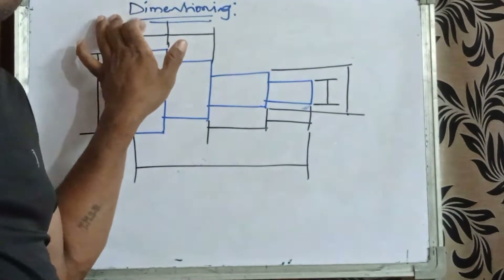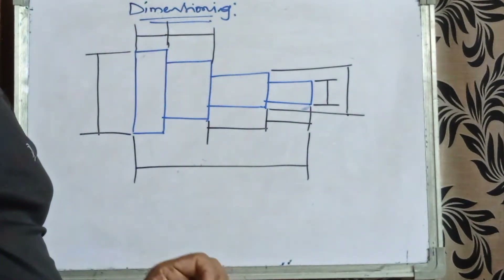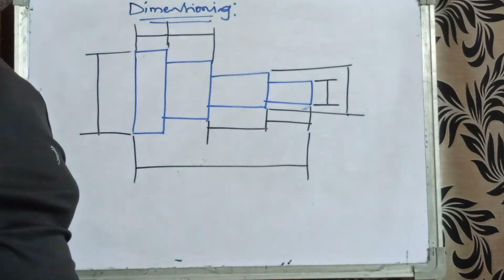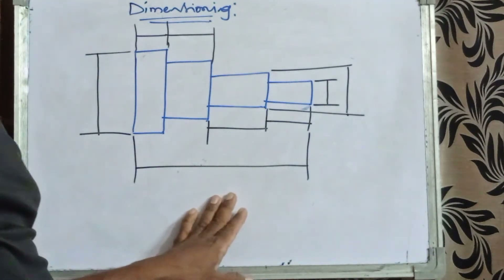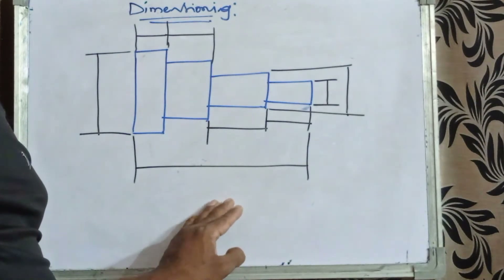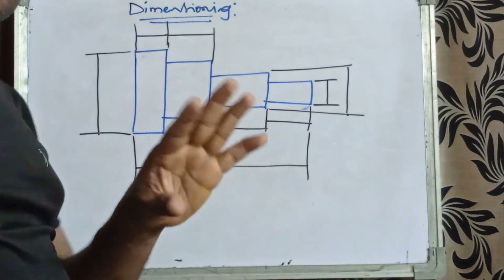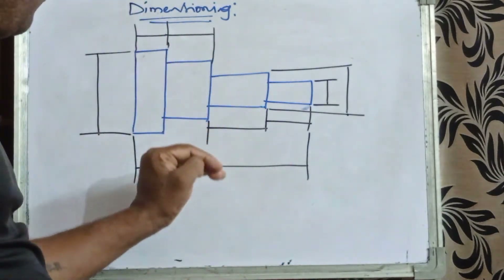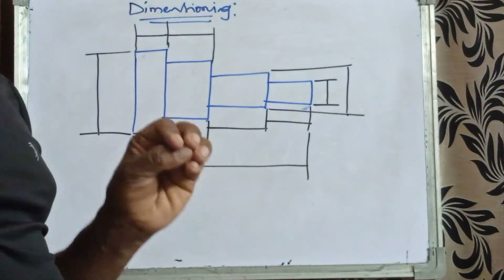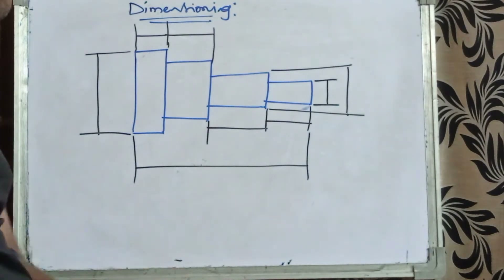Next is dimensioning, which is also very important. Many students fail in drawing because of dimensioning. If you follow these four rules — dimensioning, numbering, given data, and HP to HP difference — then you can easily get maximum marks in engineering drawing.